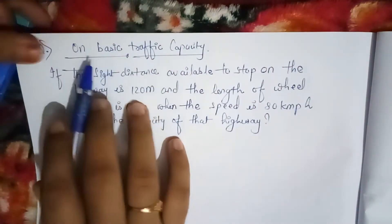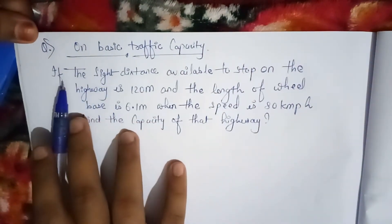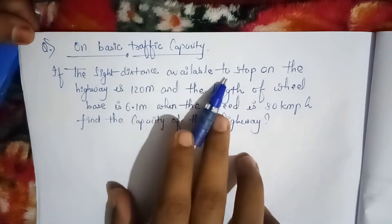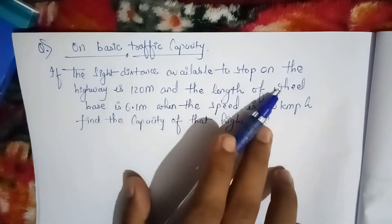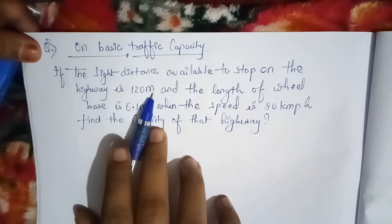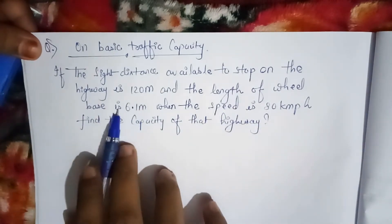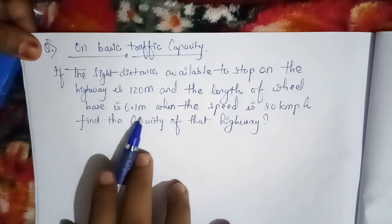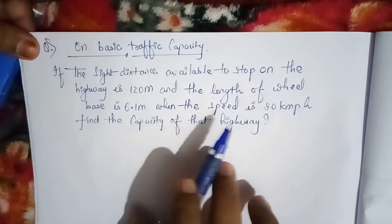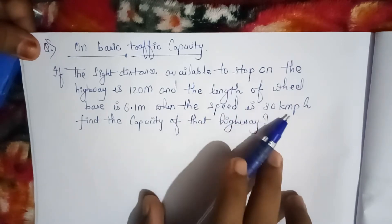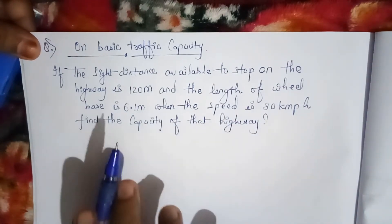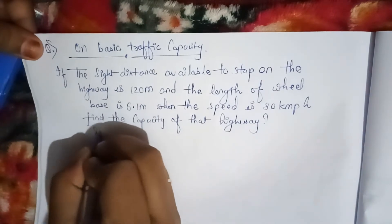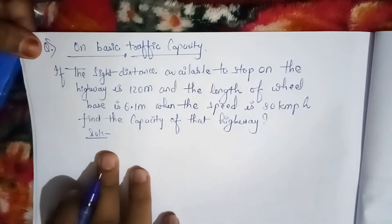Our question is based on traffic capacity. The question says: if the sight distance available to stop on the highway is 120 meters, and the length of a wheelbase is 6.1 meters — as per IRC, if wheelbase is not given, you take 6.1 meters — and when the speed of a vehicle is 80 km per hour, find the capacity of that highway.